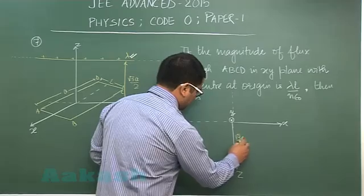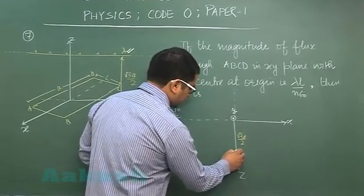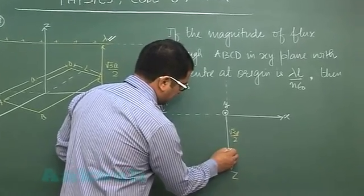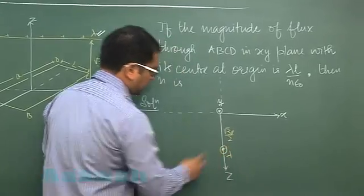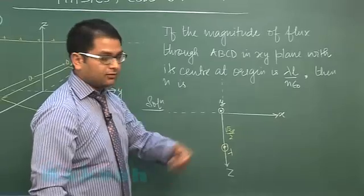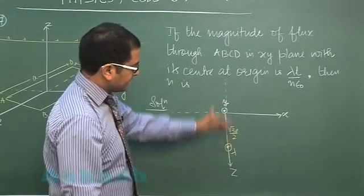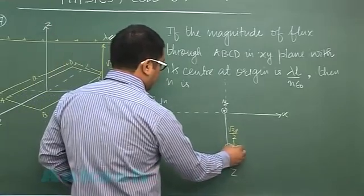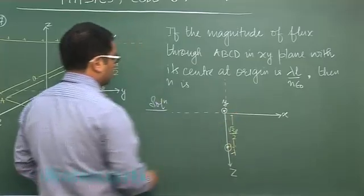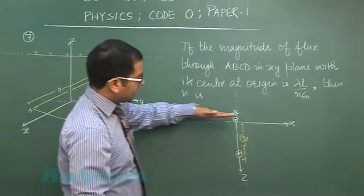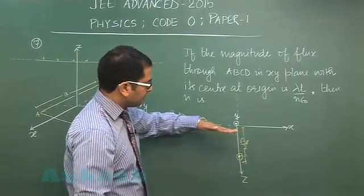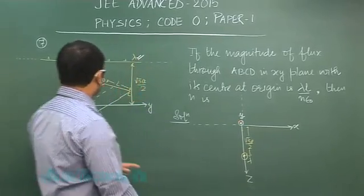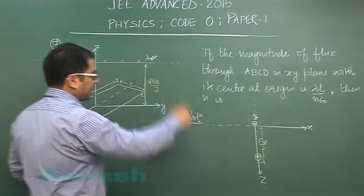Now in this particular plane you would be having the line charge at z equals root 3a by 2, somewhere here, and here is that infinitely long line charge, half part outside, half part inside, at z equals root 3a by 2. And where is that rectangular frame? The rectangular frame is in the xy plane.